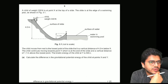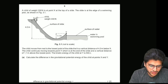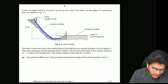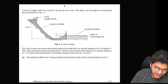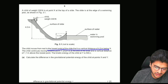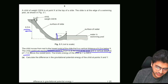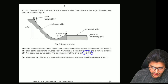Next question. A child of weight 330 Newtons is at point X at the top of a slide at the edge of a swimming pool. The child moves from rest to the lowest point, which is a vertical distance of 4 meters below. The child continues moving towards point Y, which is at the end of the slide and a vertical distance of 1.1 meters above the lowest point. The kinetic energy of the child at Y is 540 joules.